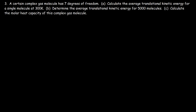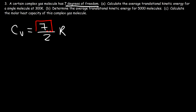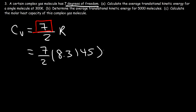For the last part, we calculate the molar heat capacity of this complex gas molecule, which has 7 degrees of freedom. Instead of (3/2)R or (5/2)R, the formula is CV = (7/2)R. So it's (7/2) times 8.3145, which equals 29.1 joules per mole per kelvin. These problems are not that bad.